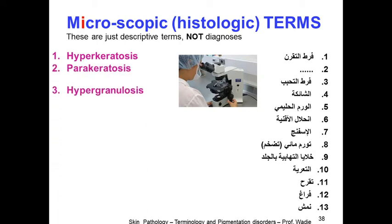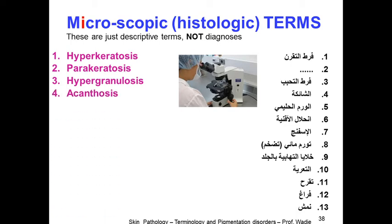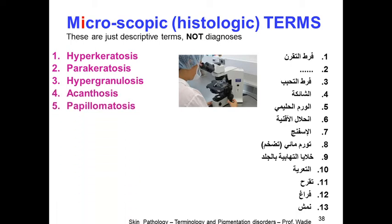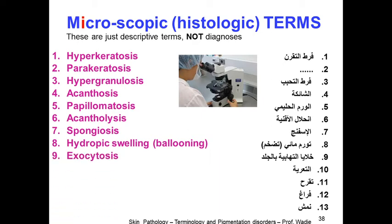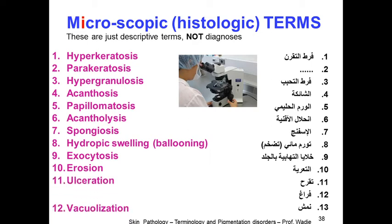The microscopic terms include: hyperkeratosis, parakeratosis, hypergranulosis, acanthosis, papillomatosis, dyskeratosis, spongiosis, hydropic swelling or ballooning, exocytosis, erosion, ulceration, vacuolization, and lentiginous. On your right you can find Arabic translations of these terms from Google Translate to simplify things.